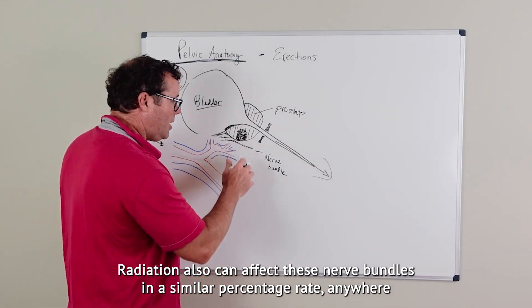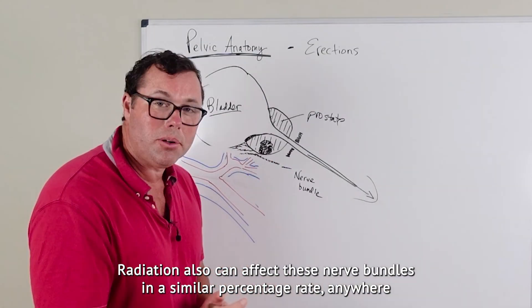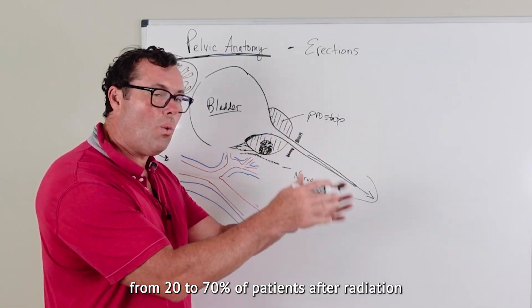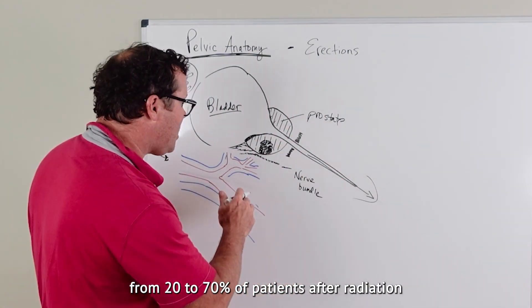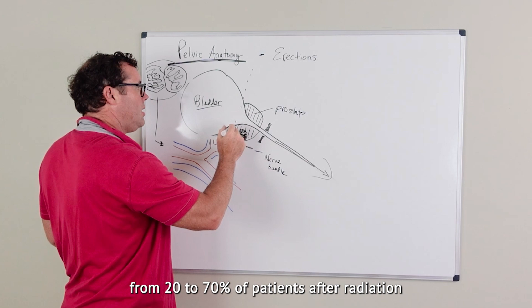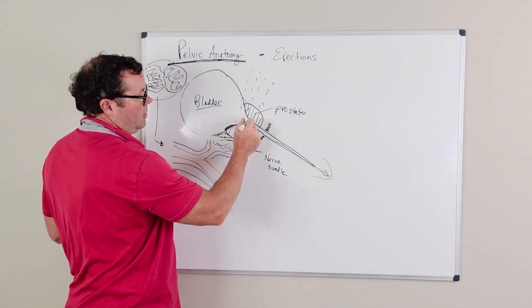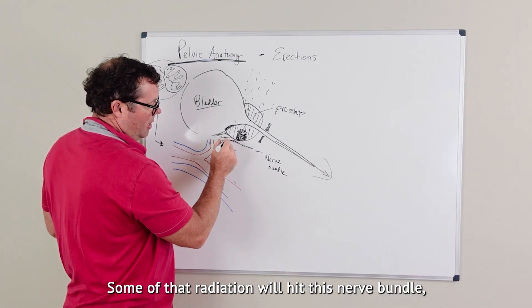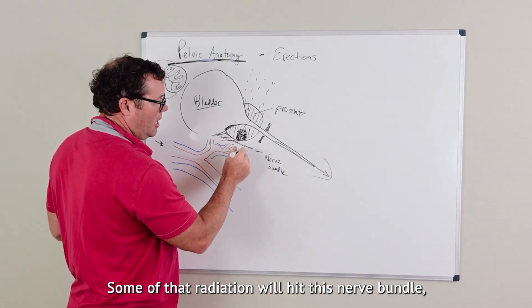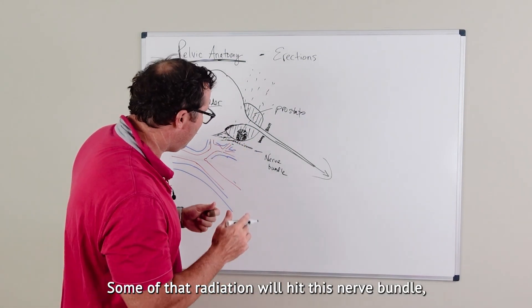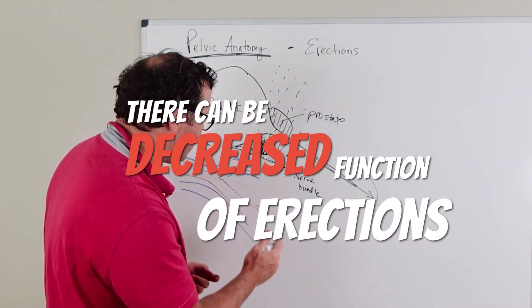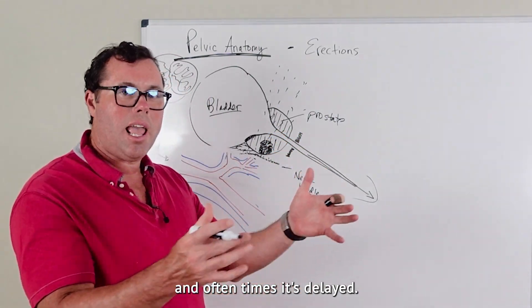Radiation also can affect these nerve bundles in a similar percentage rate, anywhere from 20 to 70% of patients after radiation, where external beam is delivered to this cancer. Some of that radiation will hit this nerve bundle, and so there can be decreased function of erections, and oftentimes it's delayed.